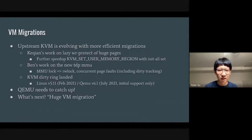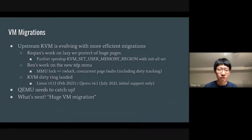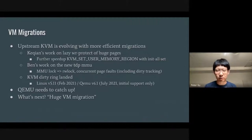The third thing is KVM dirty ring, which landed last year not only in Linux but also in QEMU. The QEMU support is only an initial one — we need more work to fully enable dirty ring as a complete feature. It's already working and making sense, but more work remains. Generally, KVM is evolving even faster, so QEMU should really catch up. I think huge VM migration will be a very important topic not only in the past year but in the next few years.